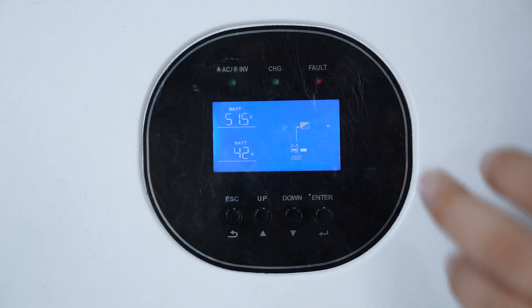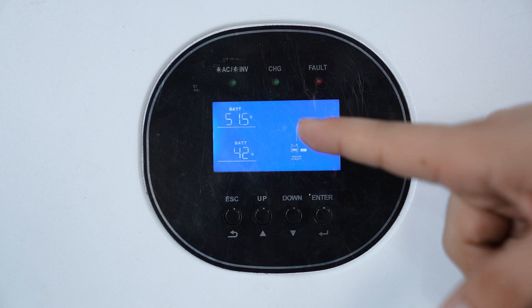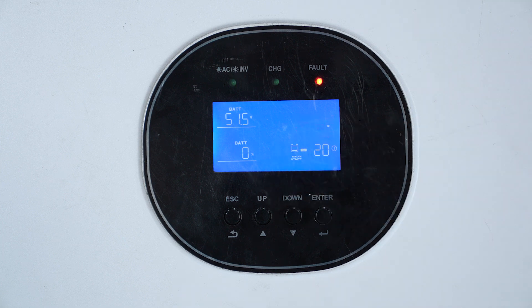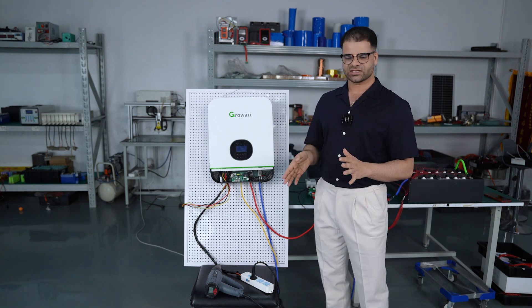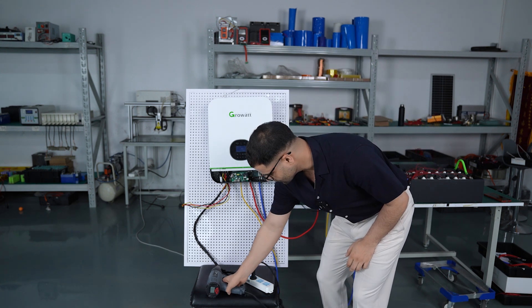You can see here the total voltage is 51.5 volts and the SOC is 42%. We have successfully connected the inverter. Now we will check it by connecting a load. You can see it's working now, and you can also see the output current here.